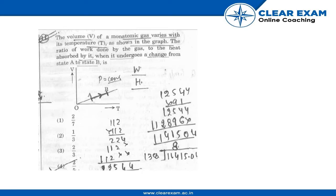From the graph, we know that V/T equals nR/P, where P is constant.